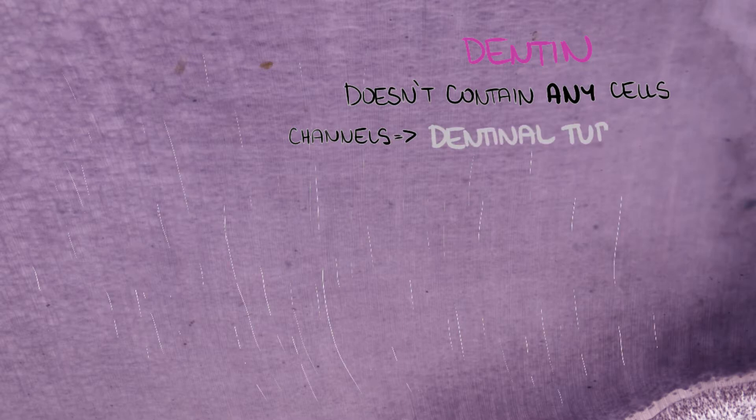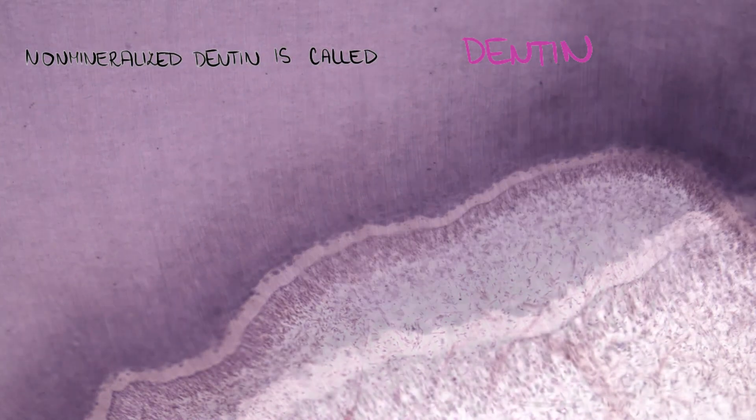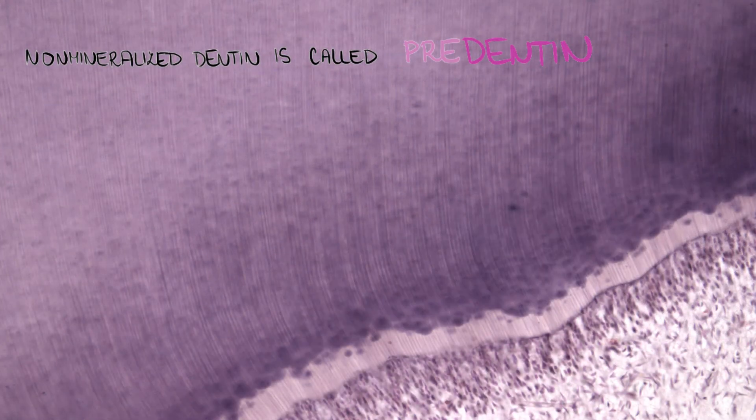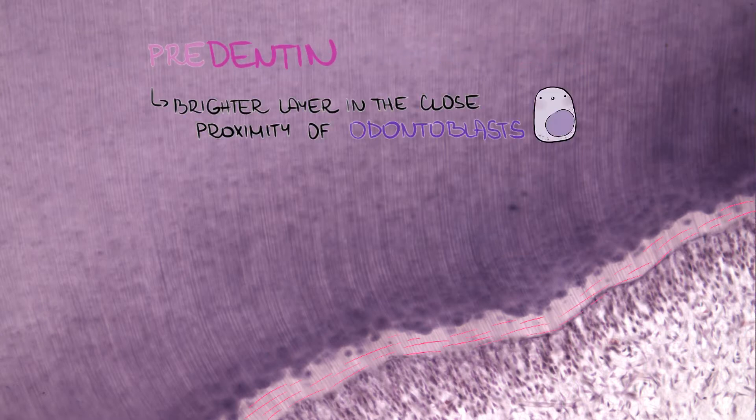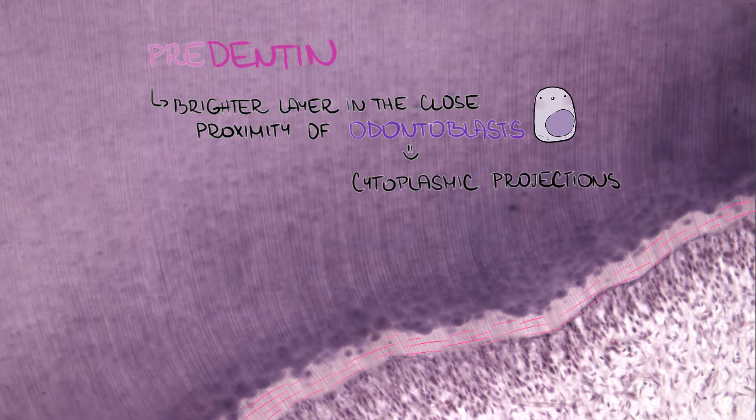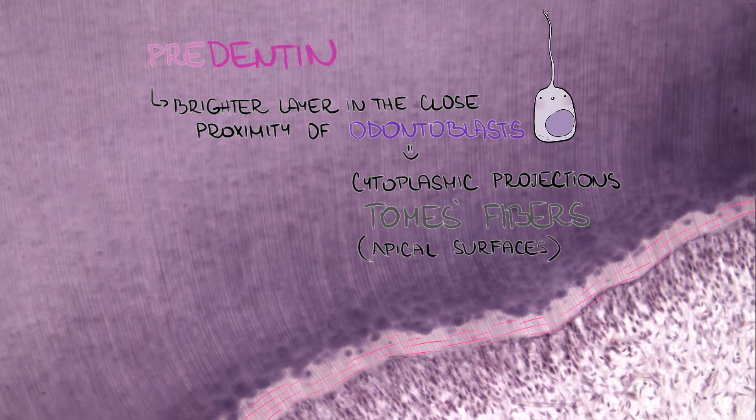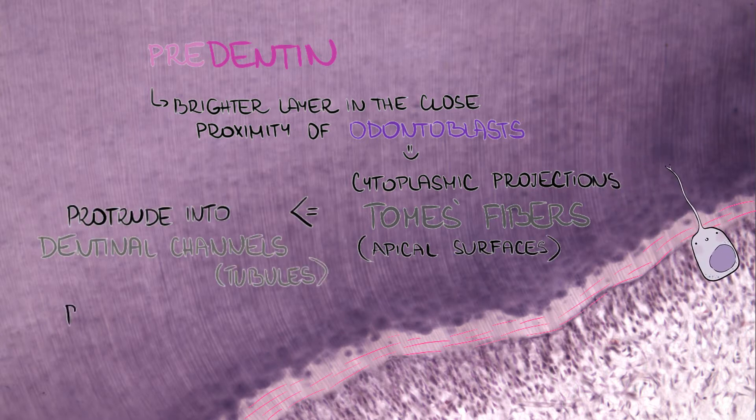Dentin doesn't contain any cells, only channels called dentinal tubules which can be seen in light microscopy. Non-mineralized dentin is called pre-dentin. We can appreciate it as a brighter layer in close proximity to odontoblasts. There are cytoplasmic projections called Tomes fibers on apical surfaces of odontoblasts. They protrude into dentinal channels, produce dentinal substance, and mineralize it.